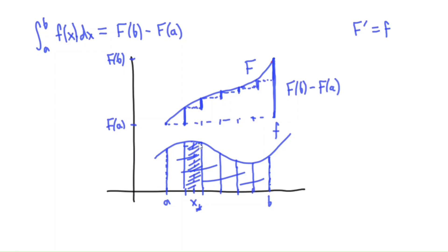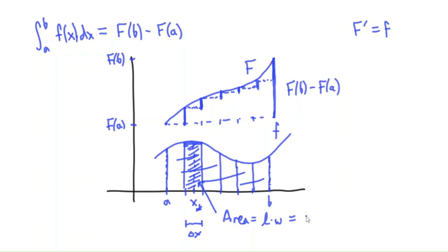We can pick any point — we'll call it x star — and use it to draw the height of the rectangle. The height is f of x star. The area of the rectangle is length times width: the width is delta x and the height is f of x star, so the area is delta x times f of x star.